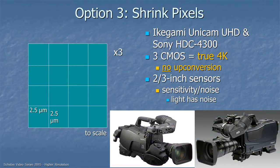Option number three is to shrink the pixels while still having a two-thirds-inch chip, but with 4K resolution instead of HD or 2K. That's what Ikegami and Sony have done in some of their new cameras. There are three CMOS chips and they are true 4K, so there's no up-conversion. But being two-thirds-inch sensors means that going to 4K has reduced the photo site size from 5 microns on a side to 2.5 microns on a side, which raises some issues about sensitivity and noise.